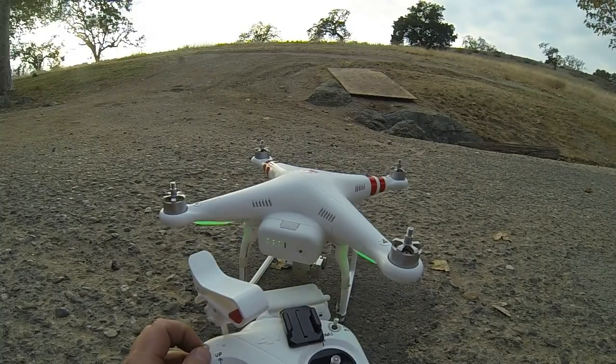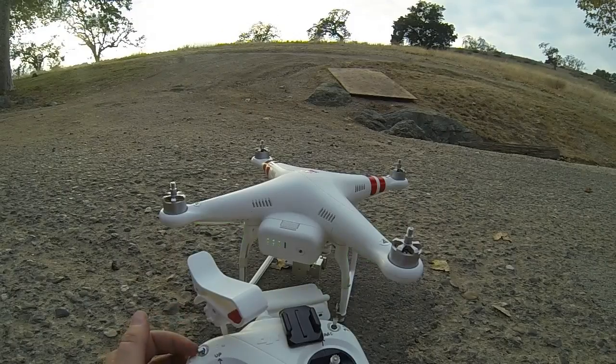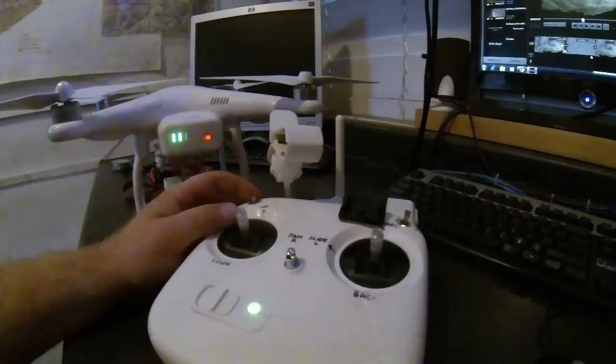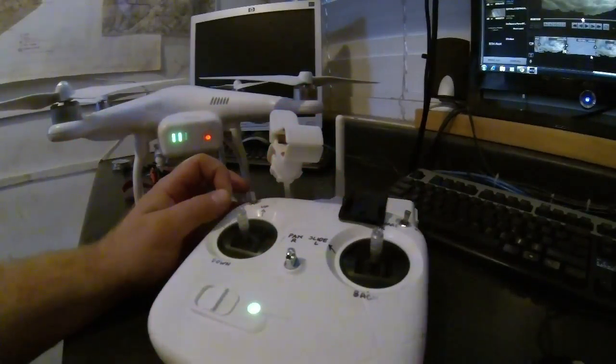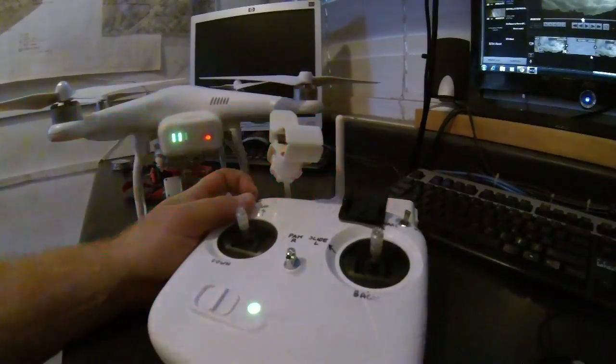Basically you just fly over an area that you want that point to be, and then you can go through that sequence, and then it should work, in theory.